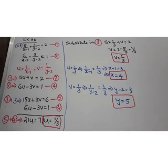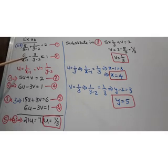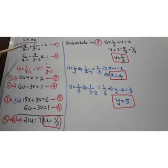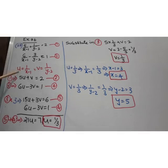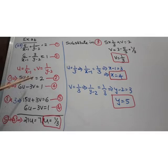Third question: 5 by (x minus 1) plus 1 by (y minus 2) is equal to 2, and 6 by (x minus 1) minus 3 by (y minus 2) is equal to 1. Rewriting as coefficient and variable: 5 into 1 by (x minus 1) and 1 by (y minus 2) itself. So 1 by (x minus 1) and 1 by (y minus 2) are the variable terms. We can substitute these as u and v. So the first equation changes to 5u plus v equal to 2, and the second equation changes.